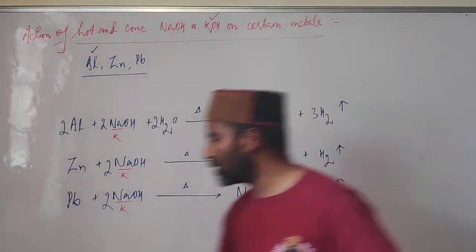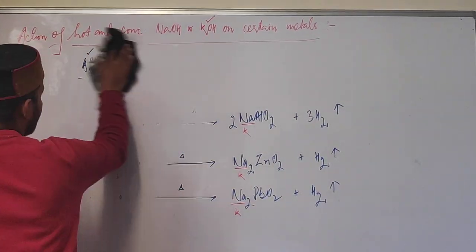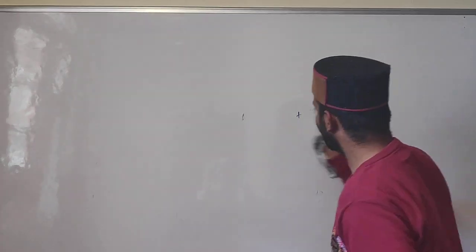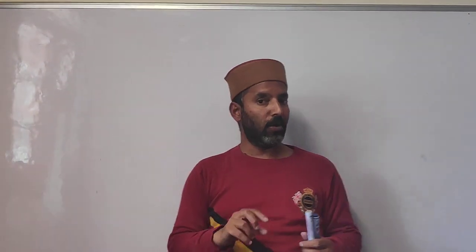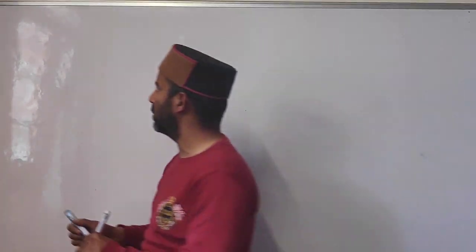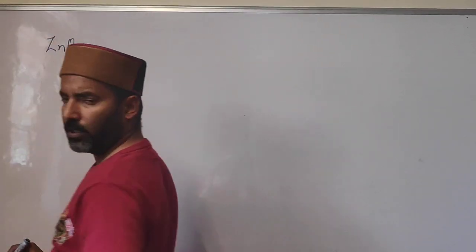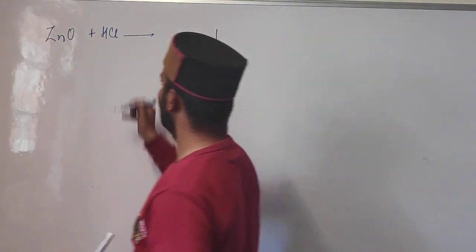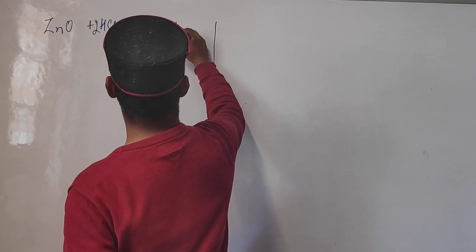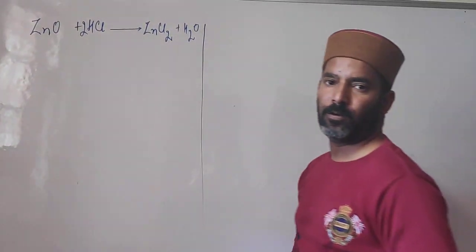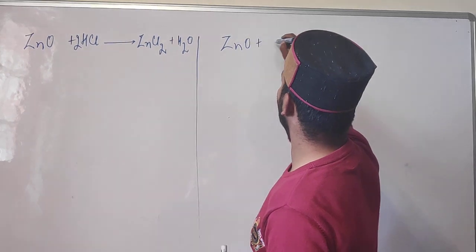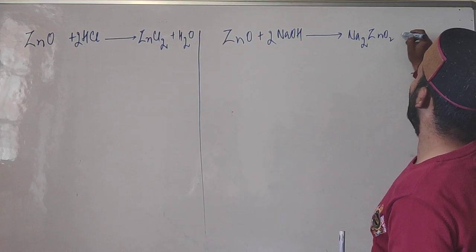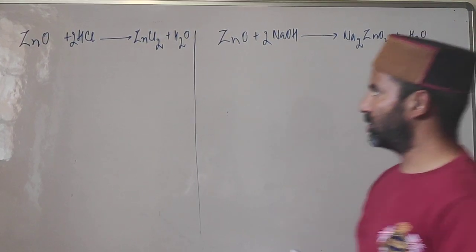Now we discuss the action of NaOH or KOH on the oxides and hydroxides of these metals, since these oxides and hydroxides are also amphoteric — they show both acidic and basic character. Take zinc oxide ZnO as an example: it reacts with acid HCl in a neutralization reaction to give zinc chloride and water. But zinc oxide also reacts with NaOH to form sodium zincate and water.